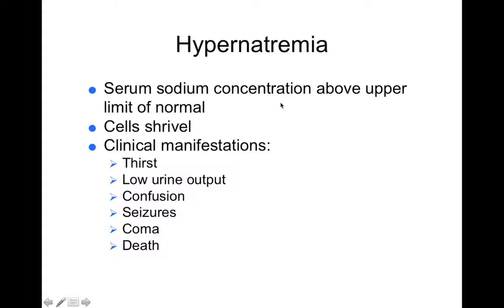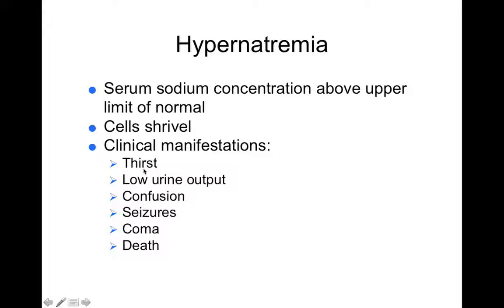Hypernatremia is high blood sodium, and this causes cells to shrivel. If you have more sodium outside a cell than inside, water goes to the outside of the cell, leaving the inside and entering the interstitial fluid, so all your cells shrivel. This causes thirst — the hypothalamus senses too much sodium in your blood and stimulates thirst. It also induces low urine output, because water follows sodium, so if you have high sodium in your body you retain that water in your bloodstream and body's tissues.